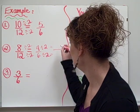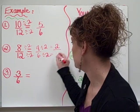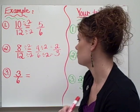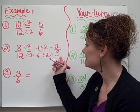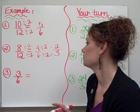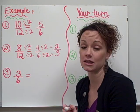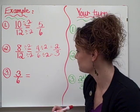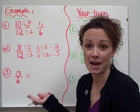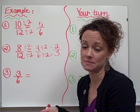4 divided by 2 equals 2. And 6 divided by 2 equals 3. So my simplified fraction in lowest terms of 8 twelfths is 2 thirds. That's the lowest equivalent fraction that I can get because I cannot divide by any other number except for 1 to make it go any lower.